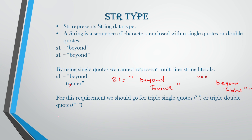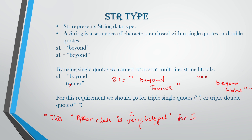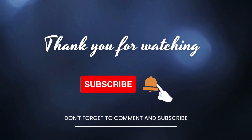If you want to use one line inside another line, you can use triple quotes like this: inside the triple quotes, use double quotes for the embedded string — for example, "Python class is very helpful" — and then continue with other text such as 'for Java students', then close the triple quotes. So you have embedded a double-quoted line inside a triple-quoted string. This is all about the str data type. See you in the next video — till then, stay tuned and keep learning. Bye!